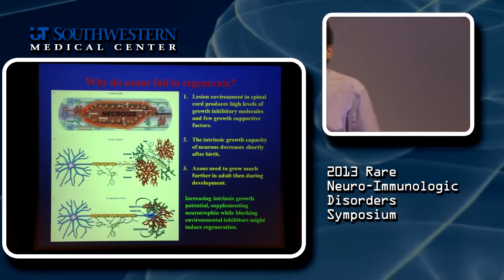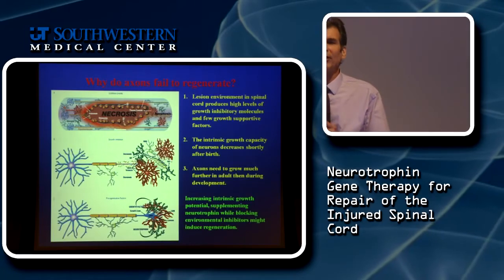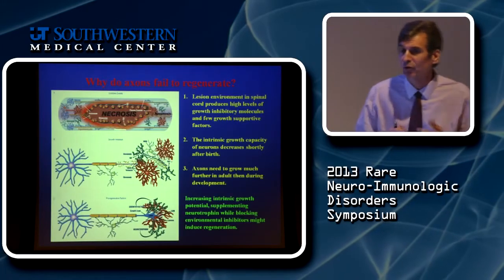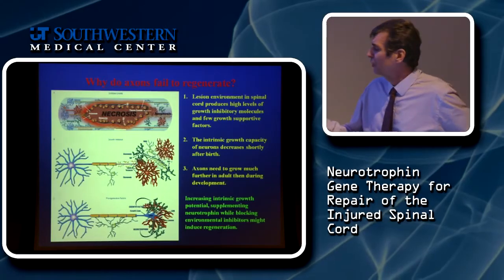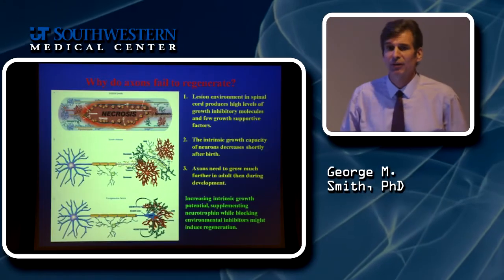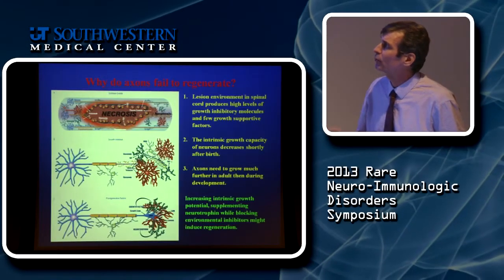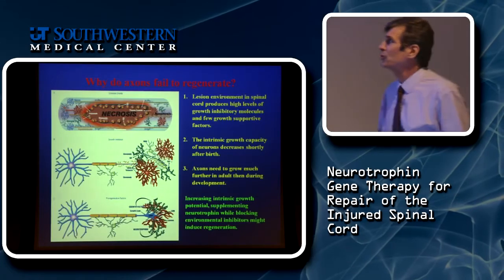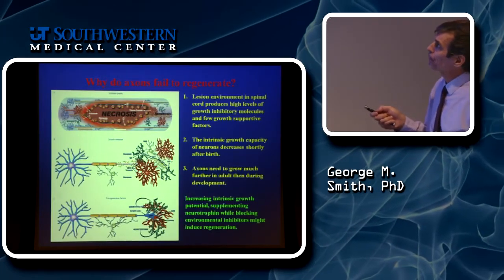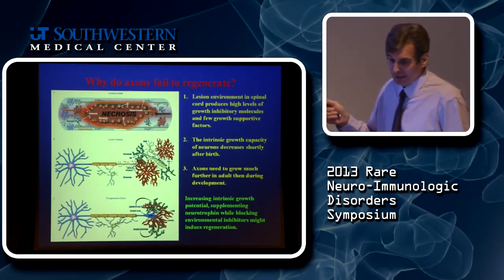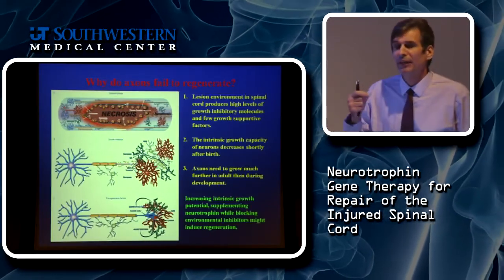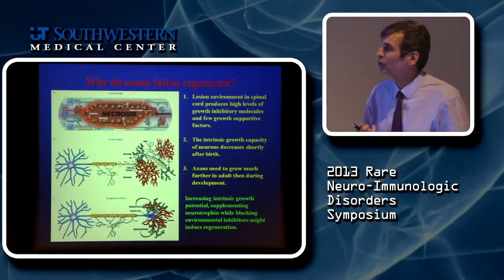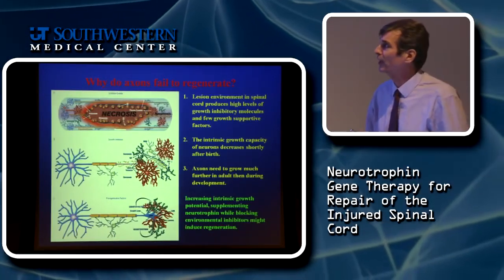After injury in the adult nervous system, a number of complexities arise that affect either the lack of growth or the ability to induce regeneration. After mechanical trauma to the spinal cord, you get a very large necrotic zone, which is the hallmark of where the glial scar will form. This is full of immune cells, and over time it produces the glial scar.